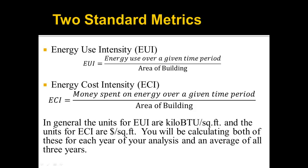These two different metrics have a couple different units. The units of EUI, or energy use intensity, are usually kilo BTUs per square foot or thousands of BTUs per square foot. The units of energy cost intensity are usually dollars per square foot. So when you're completing your tasks, these are the units I want you to use.